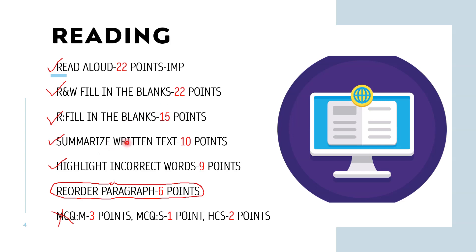Summarize Written Text is the easiest task of PTE — use connectors, pick the first line as-is, then put a semicolon, use a connector, add a comma, choose the second line, then semicolon, use 'hence' as a connector, then the third line. Write within the form — 50 to 70 words. If you write 49 or more than 70 words, you will get zero for that question. You only get one question in the final exam.